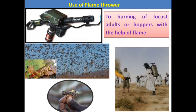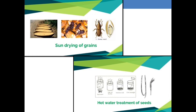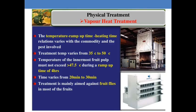With the flamethrower, we can release very high heat which kills the adults or hoppers of locust. The sun drying technique is used by farmers after harvesting crops, and this drying technique helps reduce the infestation of stored grain pests. Hot water treatment of rice seeds helps reduce the infestation of white tip nematodes. Vapor heat treatment is used in mango during storage to reduce fruit fly infestation.